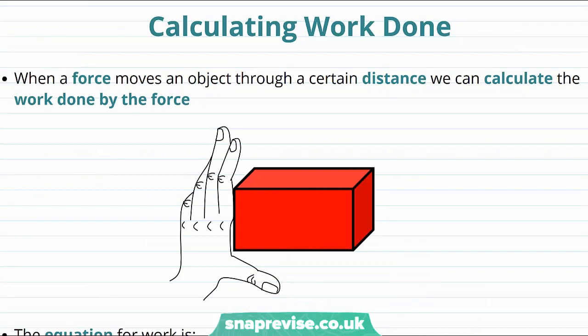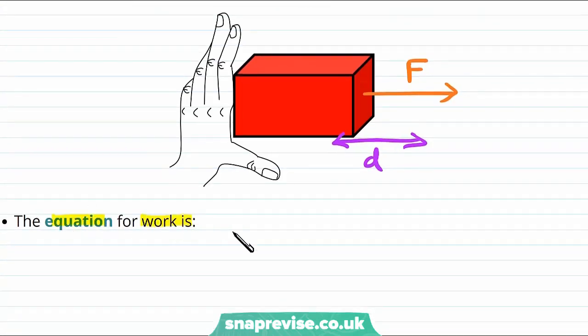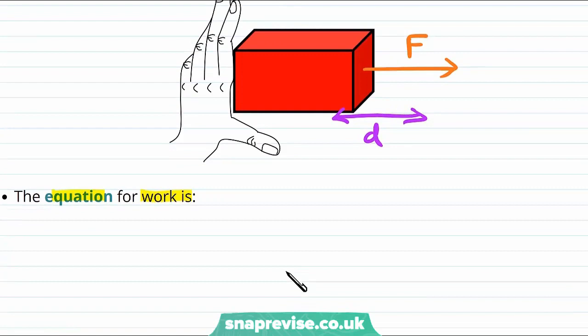Now if we want to calculate the work done, then we need more than the definition that we just gave. We're going to need a formula for it. When a force moves an object through a certain distance, we can calculate the work done by this force. So in this picture, let's imagine that we exert a force on this block. Then if it's moving in the direction that we're exerting the force, then it's this distance here that we're interested in. Now let's give the equation for work in terms of the force and the distance moved in the direction of the force. The work done is equal to the force multiplied by the distance: W = F × d.